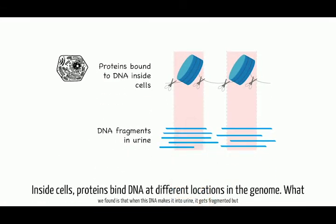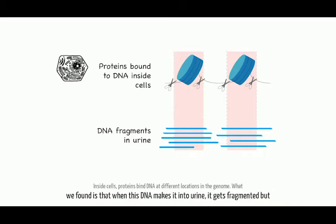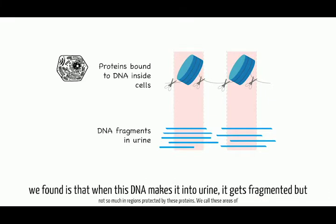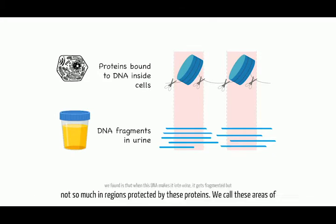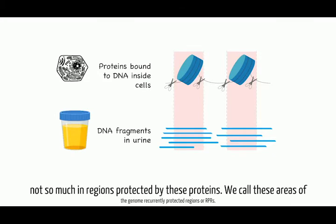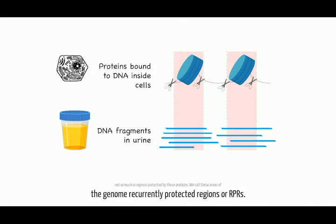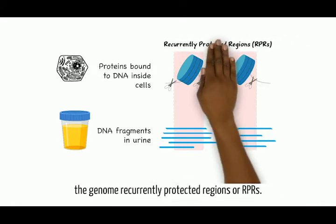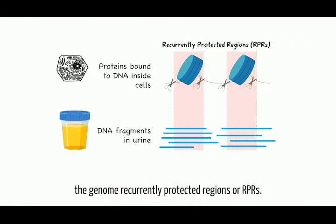Inside cells, proteins bind DNA at different locations in the genome. What we found is that when this DNA makes it into urine, it gets fragmented, but not so much in regions protected by these proteins. We call these areas of the genome recurrently protected regions, or RPRs.